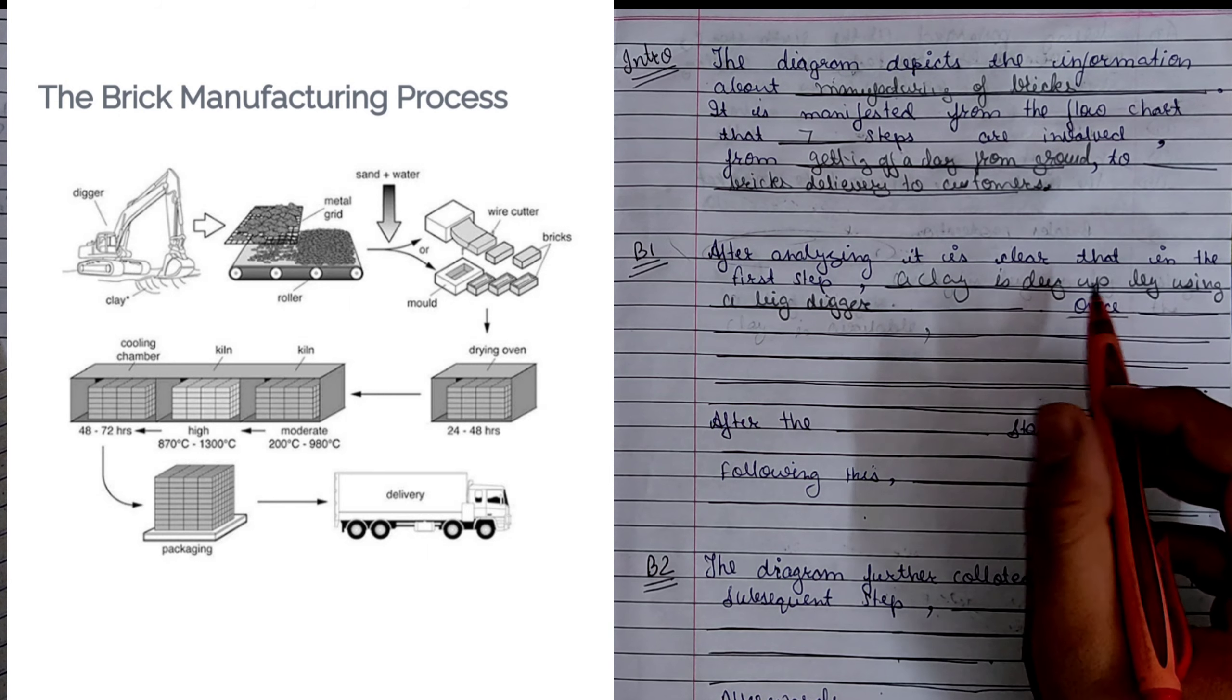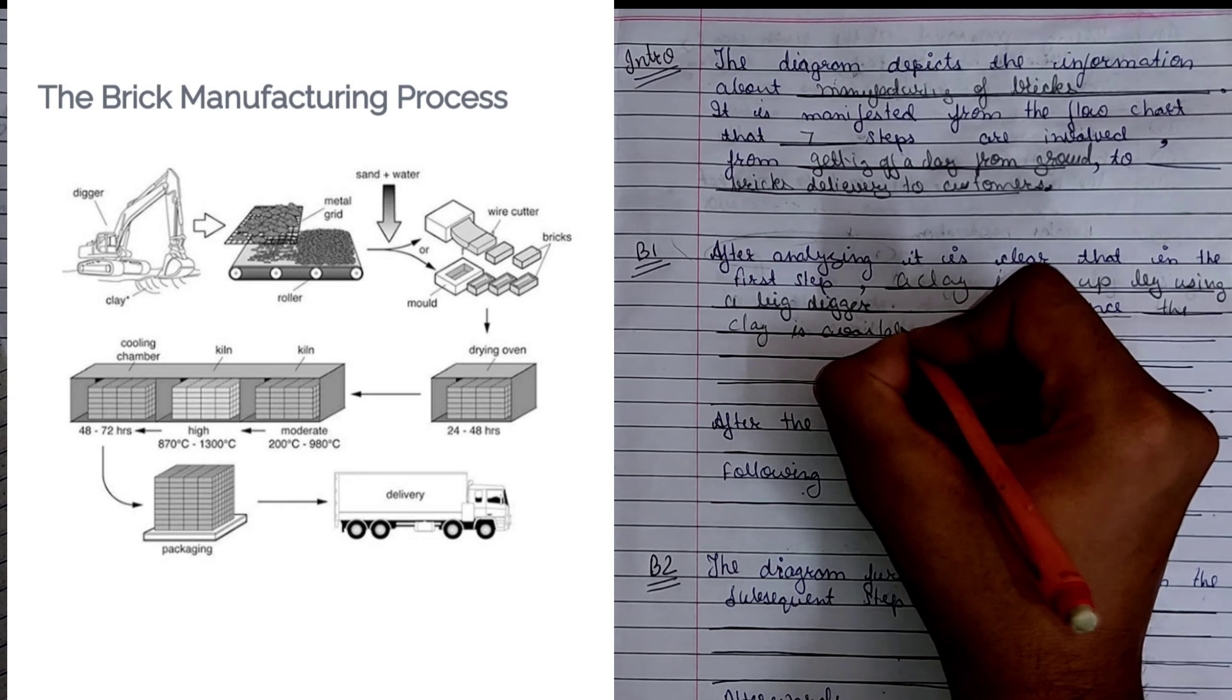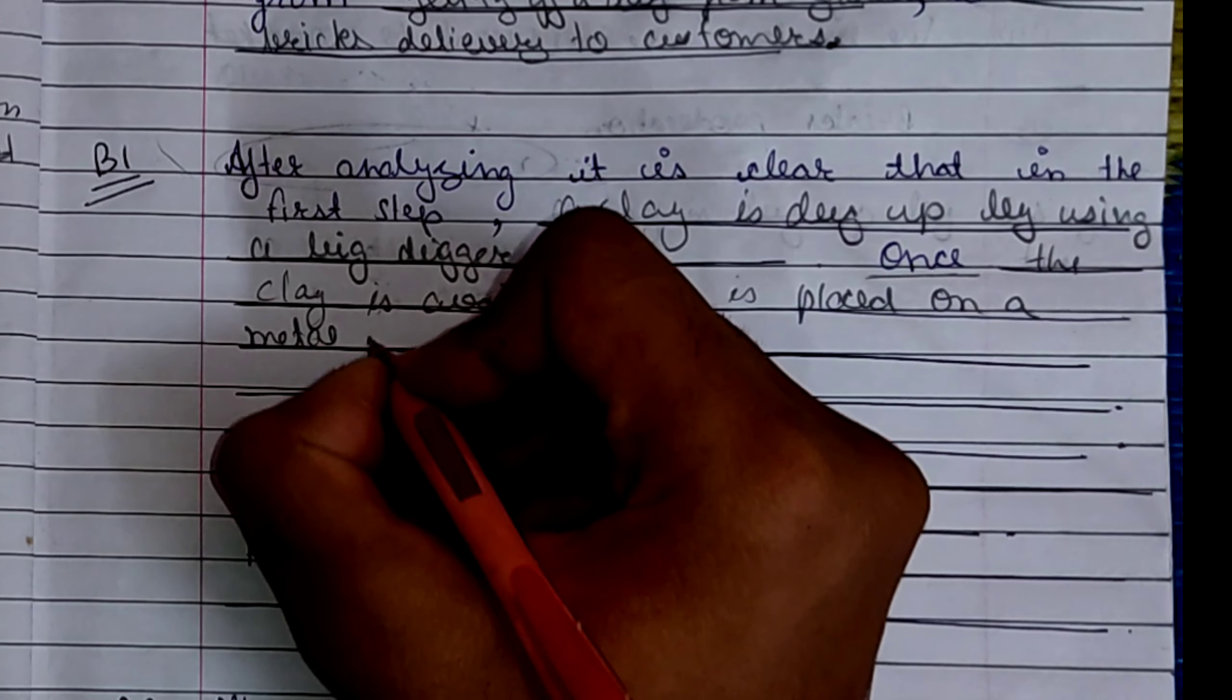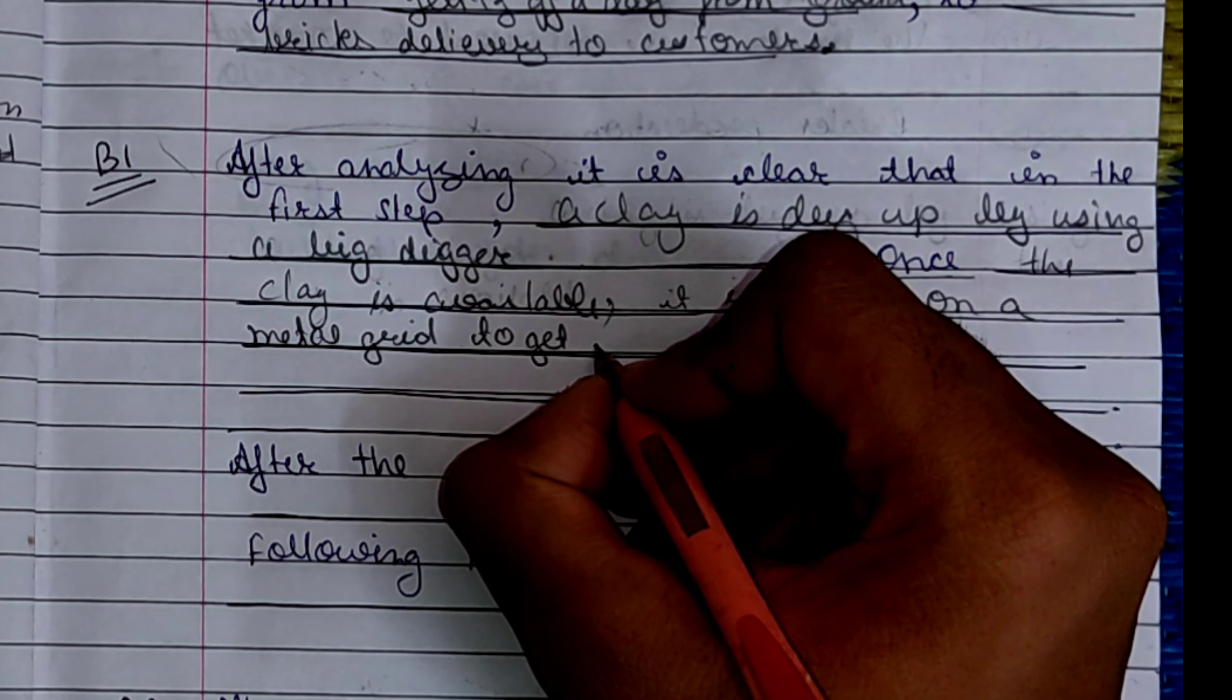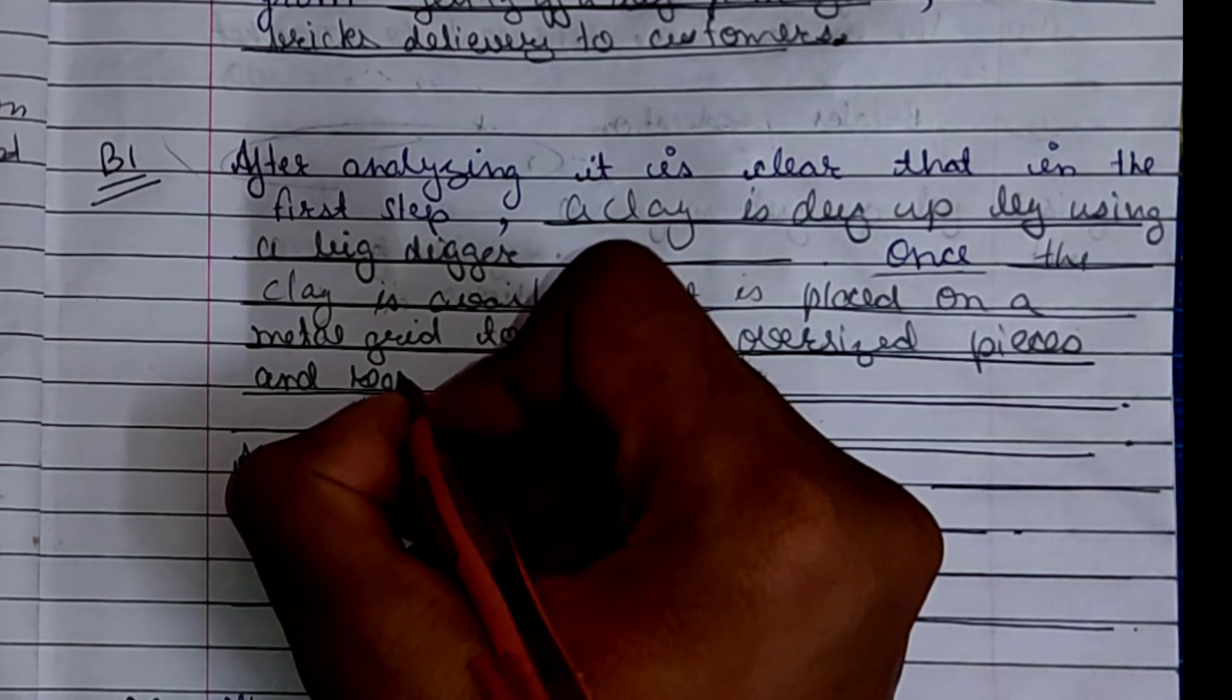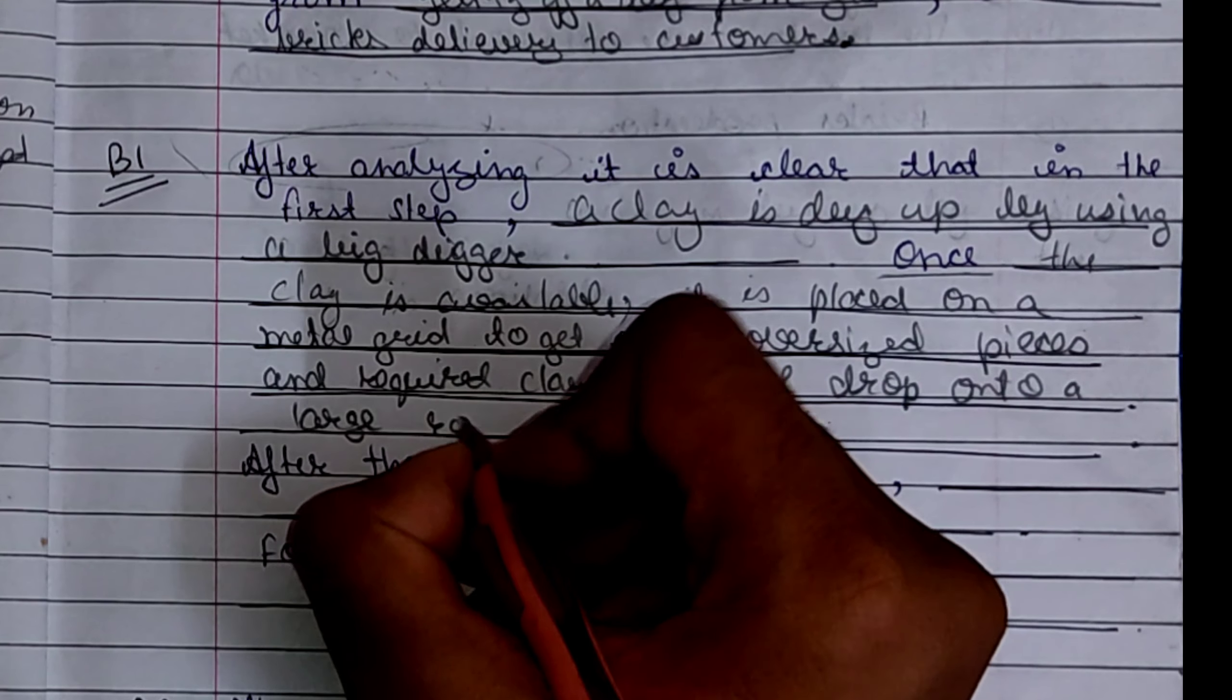Once, when you want to shift from one procedure to another one, for that you will write once. Once the clay is available, clay is available means you are highlighting the first step. It is placed on a metal grid to get rid of oversized pieces and required clay pieces are dropped into a large roller.